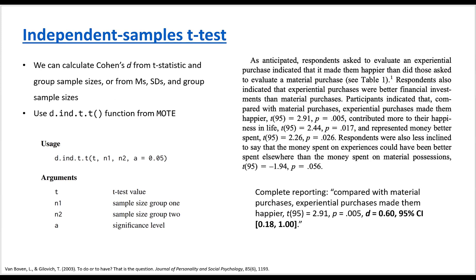The independent samples t-test is the most widely used statistical procedure for comparing two independent groups. If we use Cohen's d as the effect size metric for independent samples t-test, we can calculate Cohen's d from the reported t-statistic and group sample sizes. Alternatively, we can also calculate Cohen's d from means, standard deviations, and group sample sizes. We can do this using an R package called MOTE.